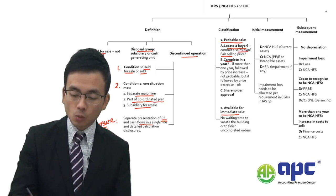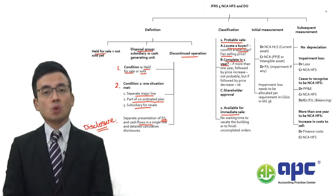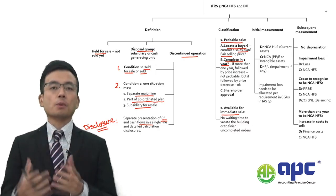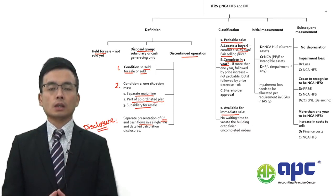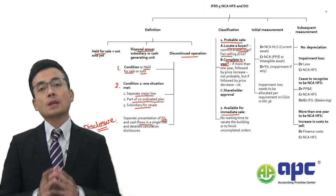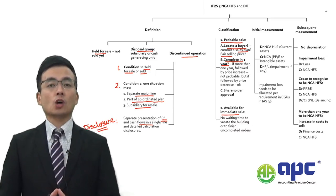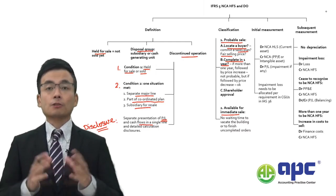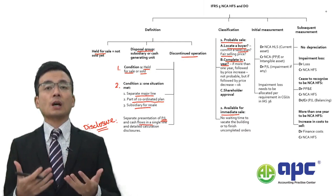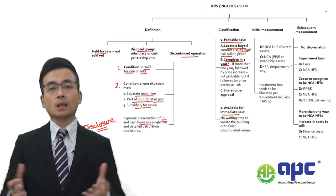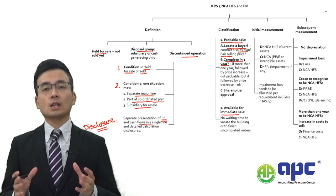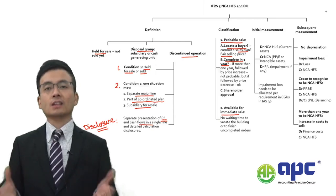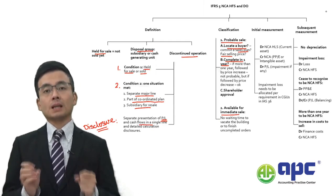You also need to confirm whether the sale could be completed within one year, because classifying something as a non-current asset held for sale means it becomes a current asset — an asset expected to be realised within one year. In some circumstances, such as a global pandemic or other unexpected situations, it is allowed to extend that deadline beyond one year. But generally it should be less than one year.